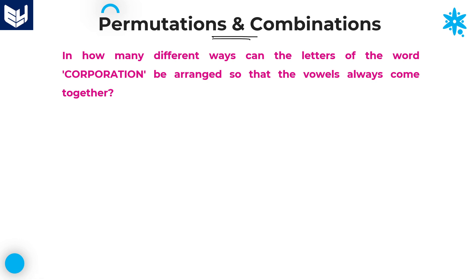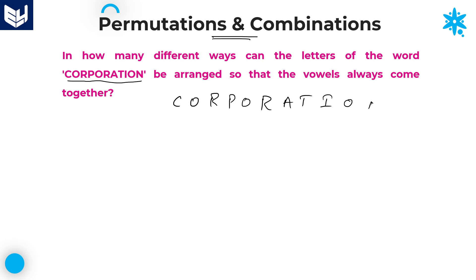See the first question. In how many different ways can the letters of the word 'corporation' be arranged so that vowels always come together? The word given is 'corporation' and the condition is that all the vowels come together.